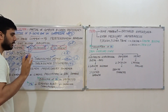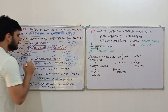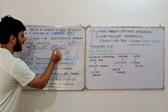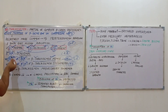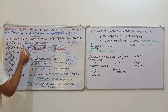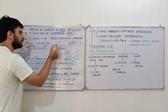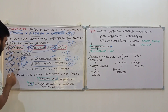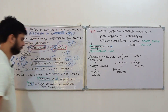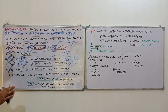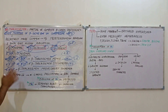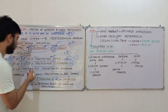The final combination is β⁰/β⁰, which gives us beta thalassemia major, also known as Cooley's anemia. We will only discuss the pathology of beta thalassemia major since the minor and intermediate forms have no or very mild symptoms.